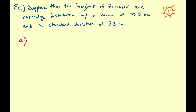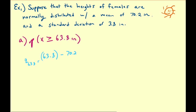As a first example, let us assume we're interested in the probability that a randomly selected female has a height that is larger than 63.8 inches. I'm going to begin by finding the z-score for 63.8. The z-score for 63.8 is going to be equal to 63.8 minus the mean, 70.2, divided by the standard deviation of the distribution, 3.8, which is approximately equal to negative 1.6842.